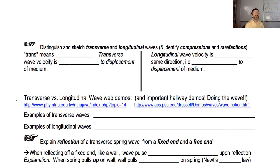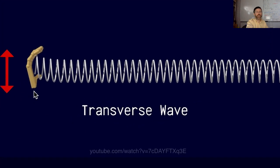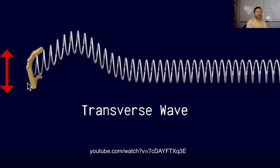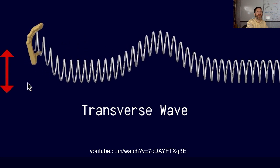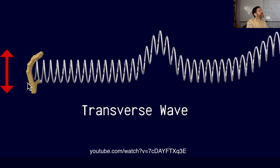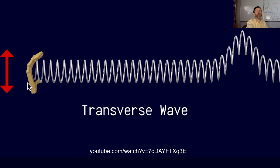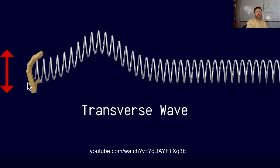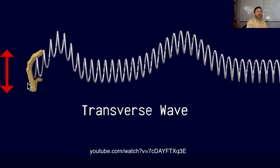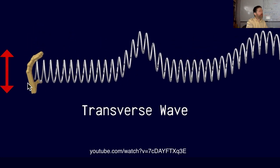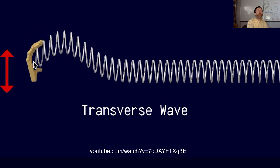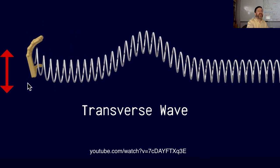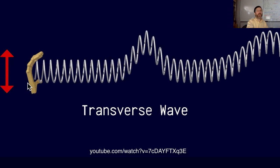The next objective is to distinguish and sketch transverse and longitudinal waves. For a transverse wave, you displace the spring or medium up and down, but the wave is actually moving in a different direction. Which way is the disturbance moving? The displacement is up and down, but the wave velocity is to the right in this demonstration.